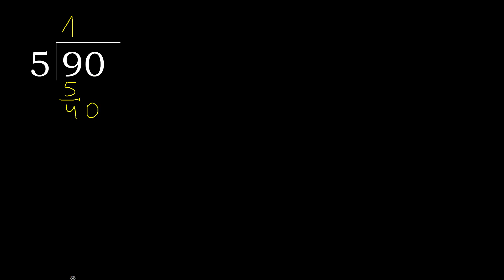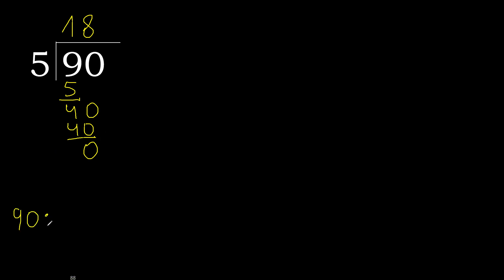40. 5 multiplied by 8 is 40 — exact, not greater. 40 minus 40 is 0. And that is not a number to bring down, therefore finish it. 90 divided by 5 is 18.